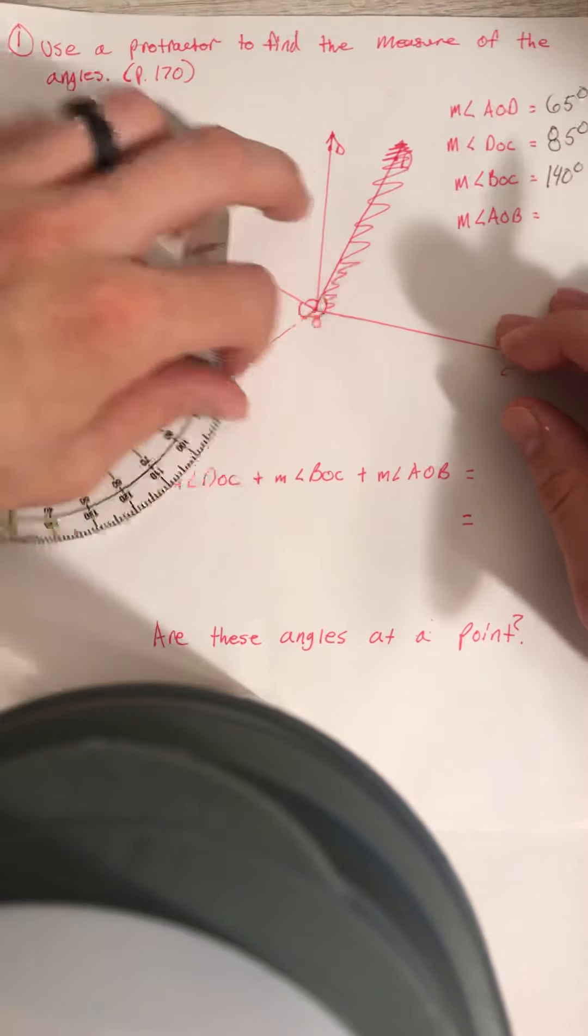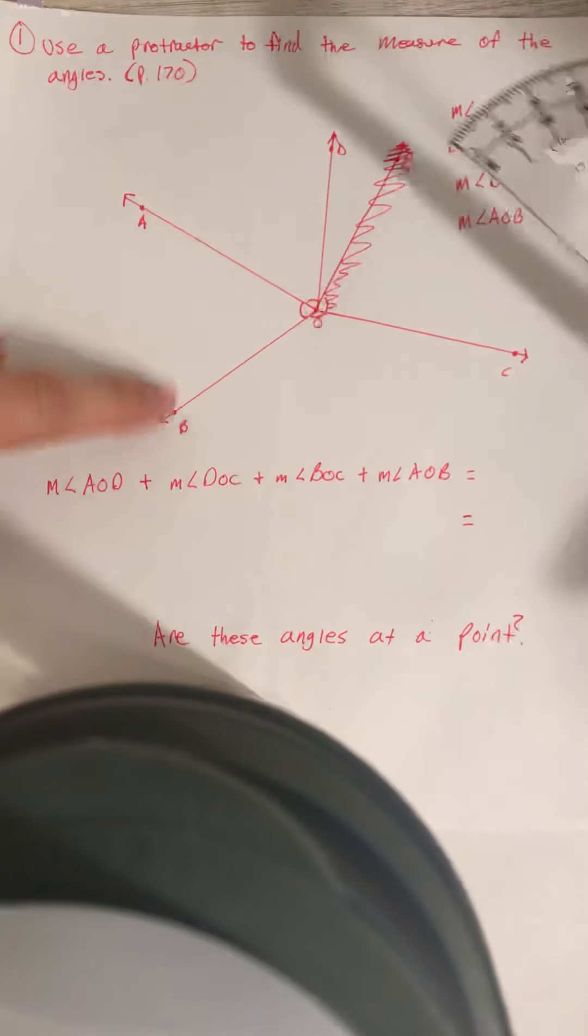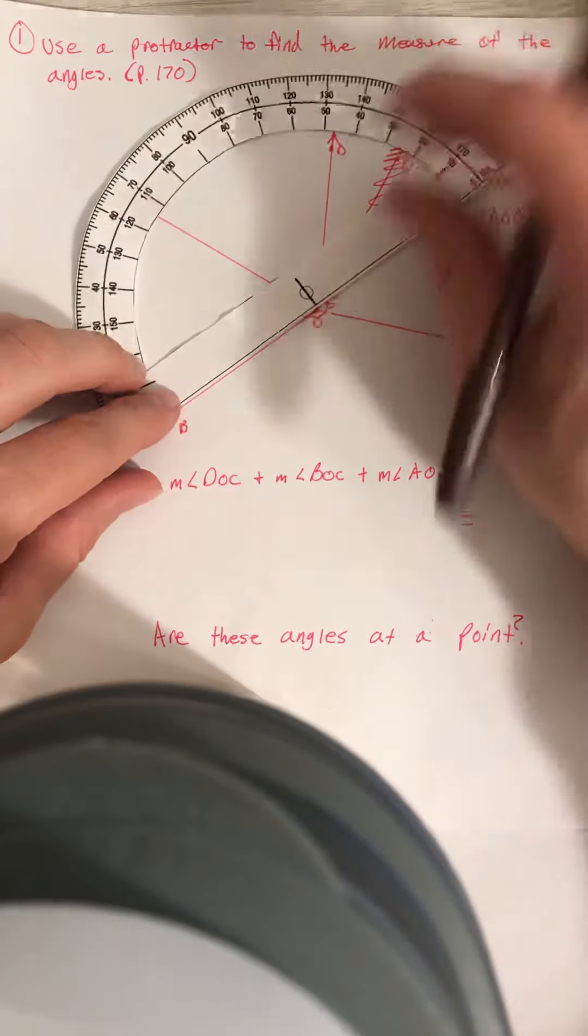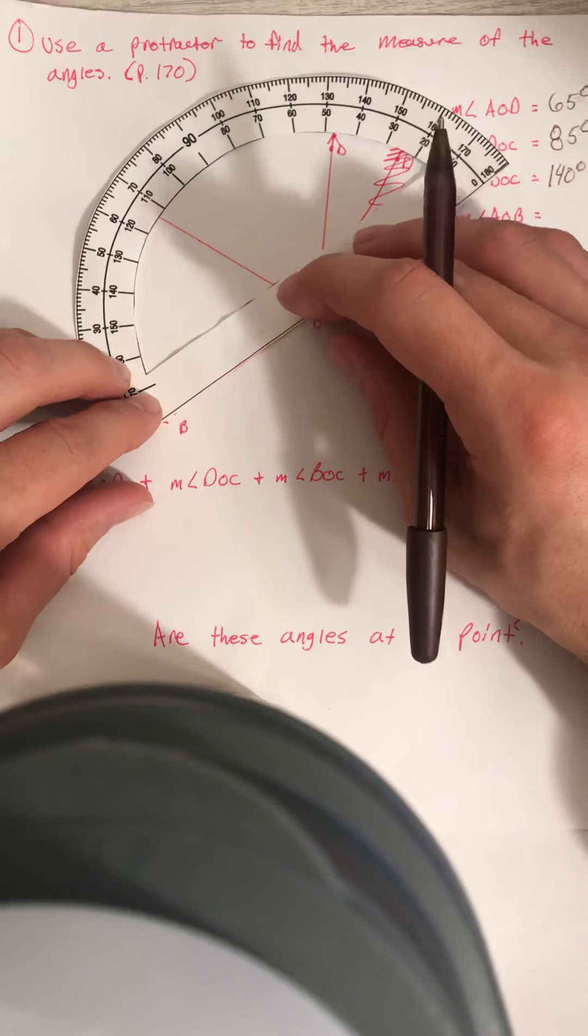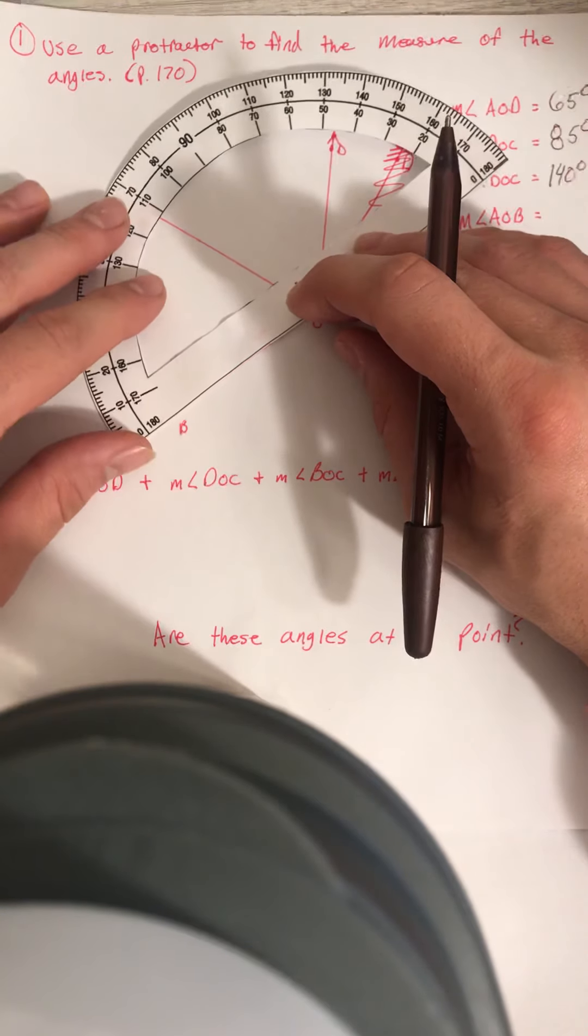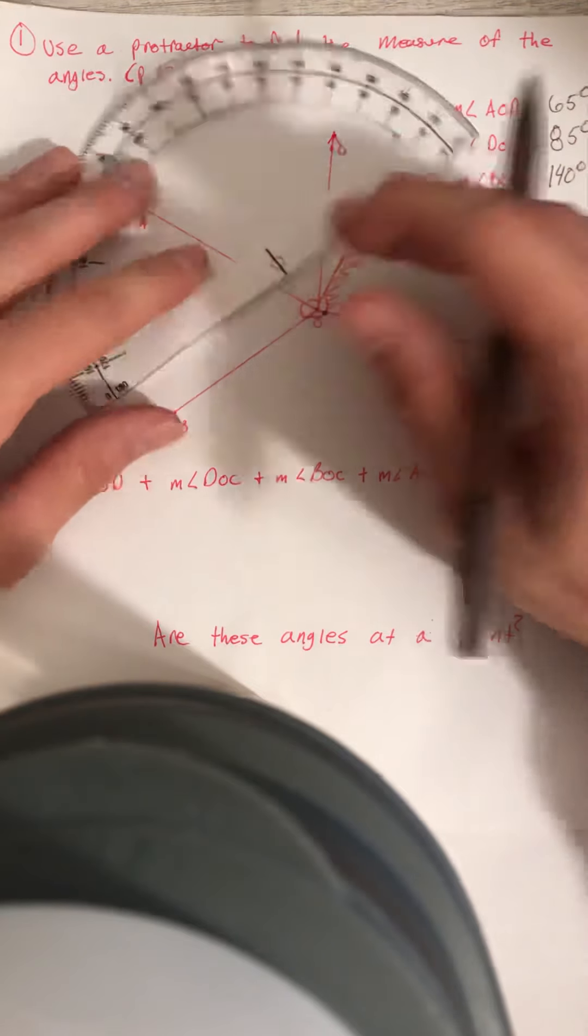And measure of AOB, the midpoint on the zero, measure of angle AOB looks like it's 70 degrees.